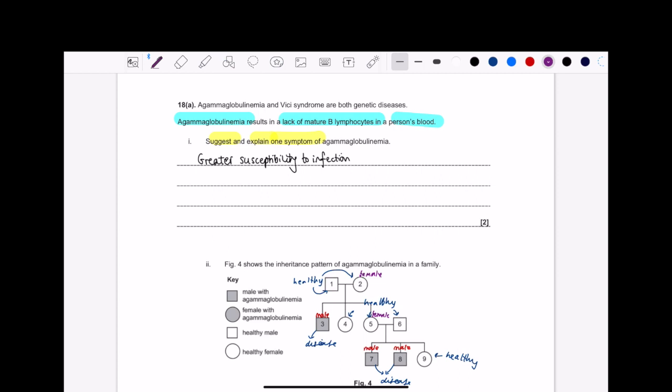So this first question here is talking about suggesting and explaining one symptom. But the thing is, loads of people actually struggle with this question. And the reason is they haven't entirely made the link between learning content and then actually trying to apply it.